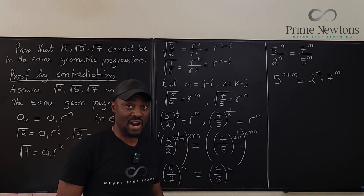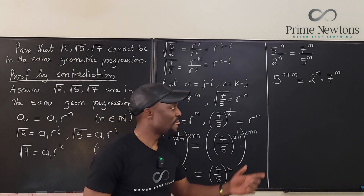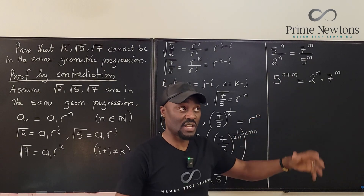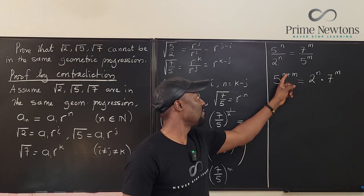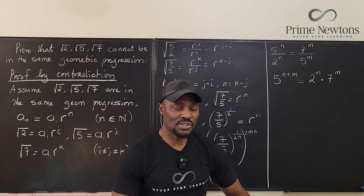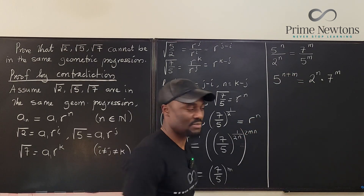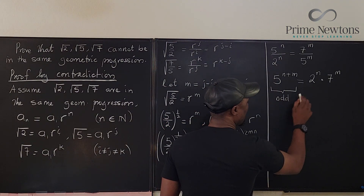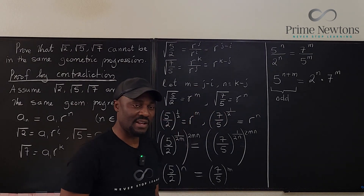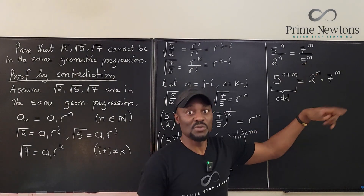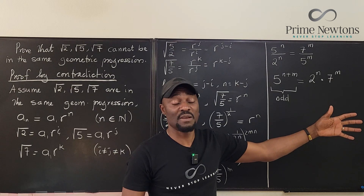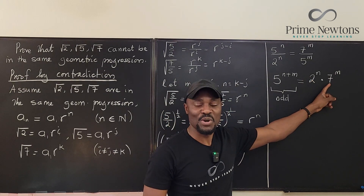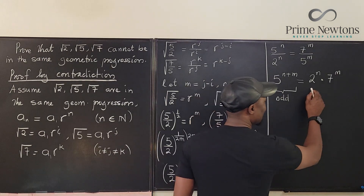The left-hand side is 5 raised to some power — five times five times five — so it's always a multiple of 5, which is always odd. The right-hand side has a factor of 2, so two times two times two however many times — that's an even number times an odd number, which is even. So the right-hand side is always even.